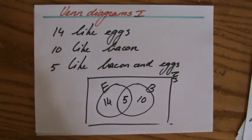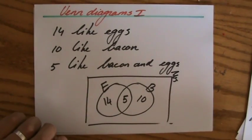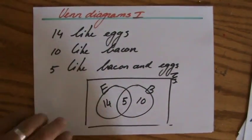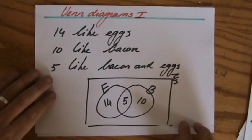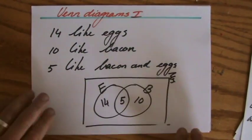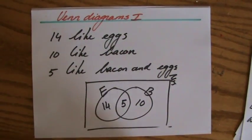Now you could say how many people in total like eggs? 19. How many people in total like bacon? 15. How many people only like bacon? 10.